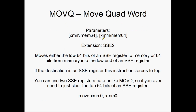MOVQ moves a quad word — introduced in SSE2, taking two parameters: SSE registers or memory 64. This actually does just move a quad word, unlike MOVD which can move D-words or quad words. MOVQ moves either the low 64 bits of an SSE register to memory, or 64 bits from memory into the low end of an SSE register. If the destination is an SSE register, this instruction also zeroes the top. Something nice is that this instruction can take two SSE registers as parameters, which means that if you go MOVQ using the same SSE register for both operands, you'll effectively zero the top of the register without touching the bottom. A good trick if you ever need to do that.